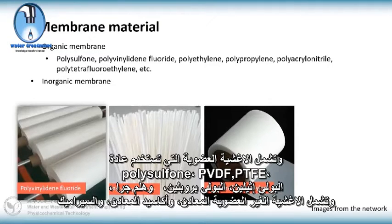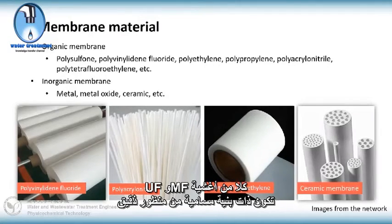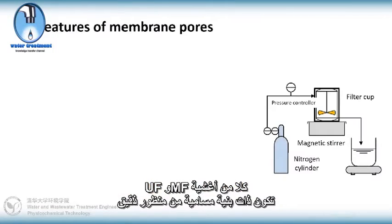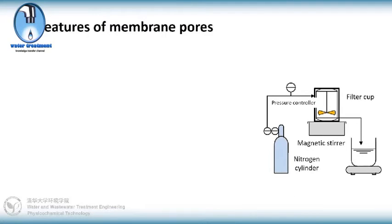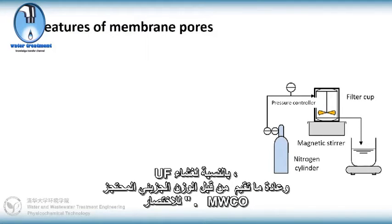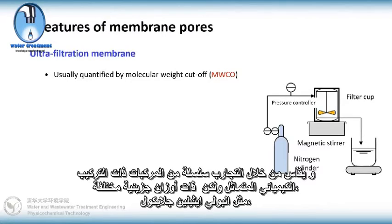Inorganic membrane materials include metals, metal oxides, and ceramics. Both UF and MF membranes have a porous structure from a microperspective. Pore size distribution is an important technical indicator to assess their separation ability. For a UF membrane, it is usually quantified by molecular weight cutoff, or MWCO for short.